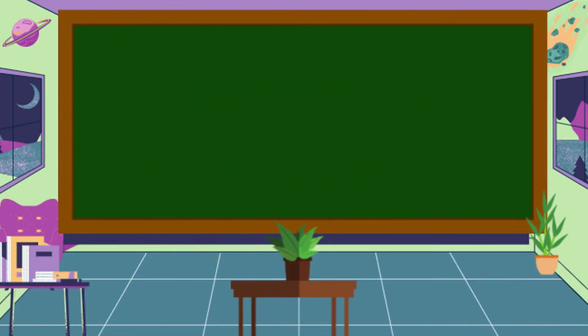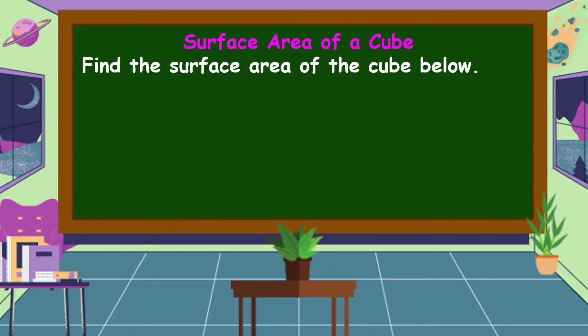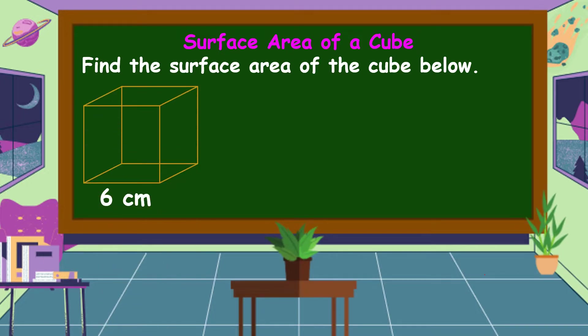Let's discuss first about the surface area of a cube. Find the surface area of the cube below with a side of 6 centimeters. The formula to find the surface area of a cube is 6a², where a is the side length.